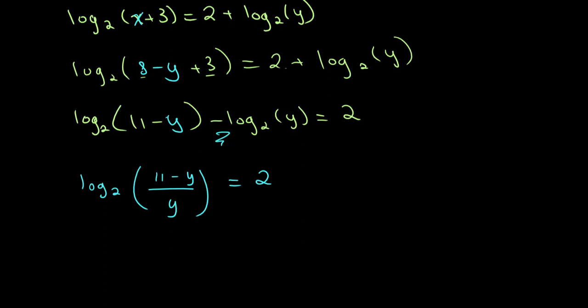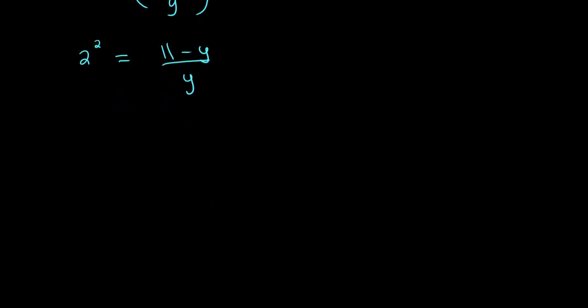We get, then using our knowledge of logarithms once again, we get that 2 squared is equal to 11 minus y over y. And if you're confused to how I got this, you should probably revisit the concept of what a logarithm is. And I go over that in my first video, which will be titled, An Introduction to Logarithms. So, anyway, this is just algebra from here on. So, we have 4 times y is equal to 11 minus y. 4y is equal to 11 minus y. 5y is equal to 11. y is equal to 11 over 5 or 2.2.